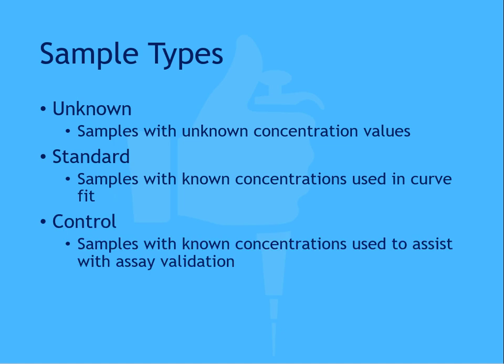Control samples are also samples with known concentrations. They're typically included in your run, and by examining the mean and standard deviation of these samples, you can ensure the assay has been performed correctly. If you're working with a qualitative assay, you may include a control sample to validate the various interpretations, for example a positive and negative control. Control samples may be included with your assay kit, but if they aren't, it's recommended to create control samples in-house.